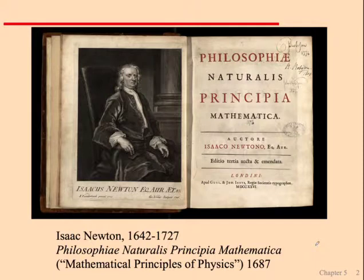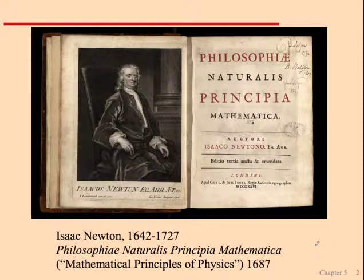Isaac Newton's Principia, published in 1687, changed everything. It became the standard for physics for the next 300-some years, just like Euclid's Elements were used as the basics of teaching math for almost two centuries. It was one of those defining moments — one of the most important books in physics.